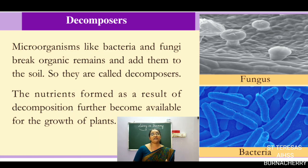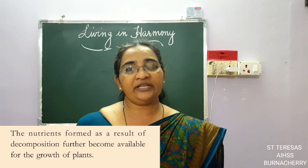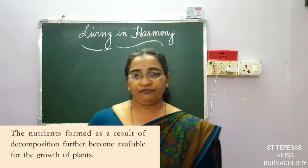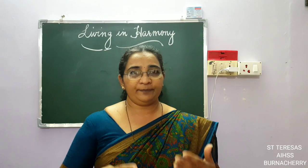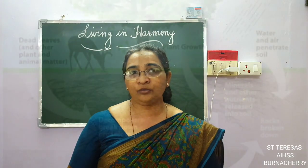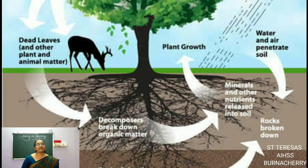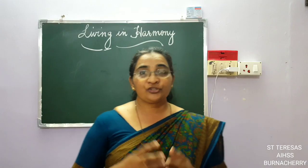The bacteria and fungi which help dead animals and plants to decay are called decomposers. The nutrients formed as a result of this decomposition are further available for the growth of plants. The decomposers act on the dead animals and leaves, break them down, they mix into the soil, and become nutrients. Plants then take in the minerals and nutrients present in the soil, so whatever dead and decayed matter falls into the ground is eventually used by plants to grow.